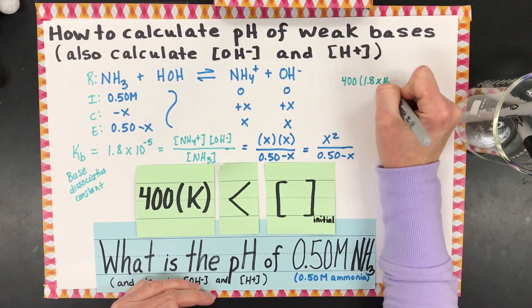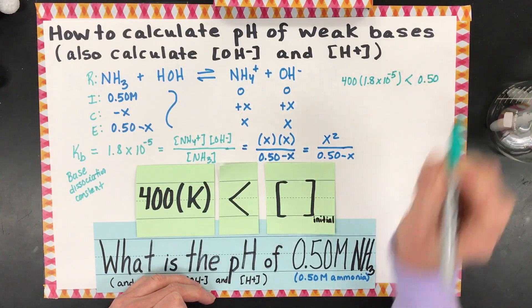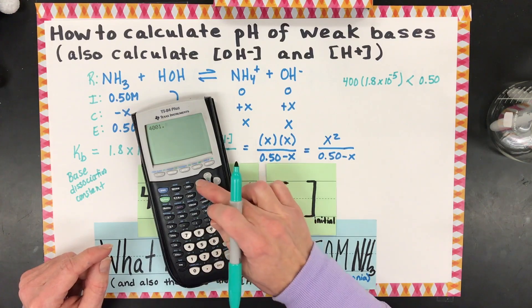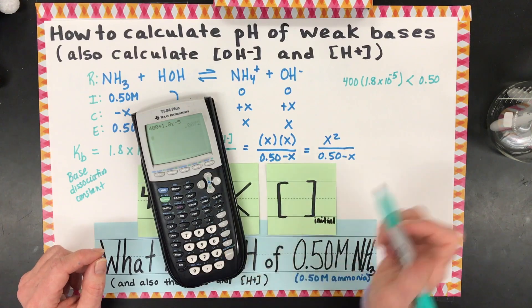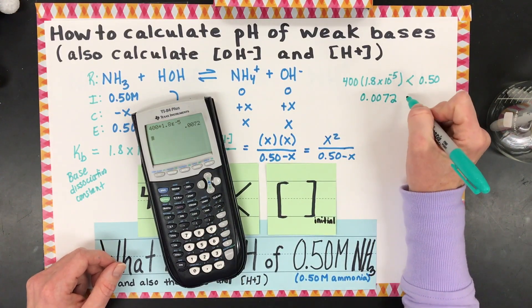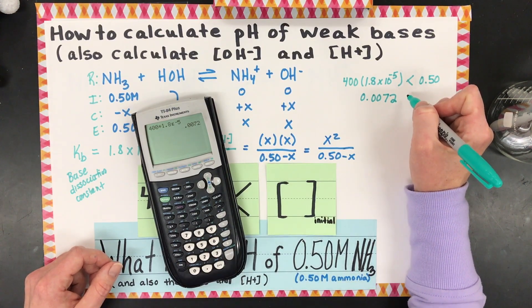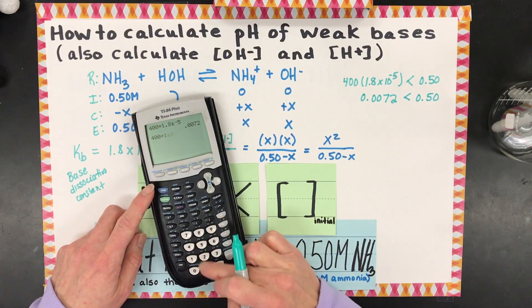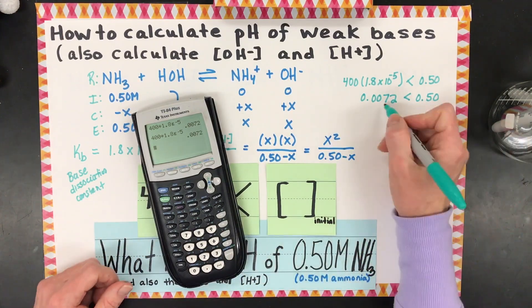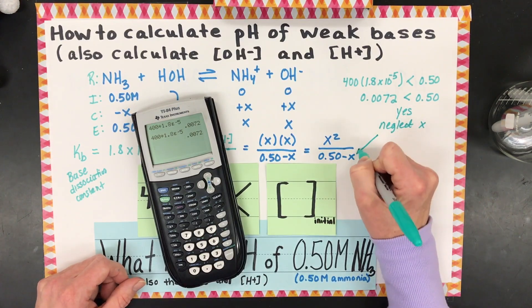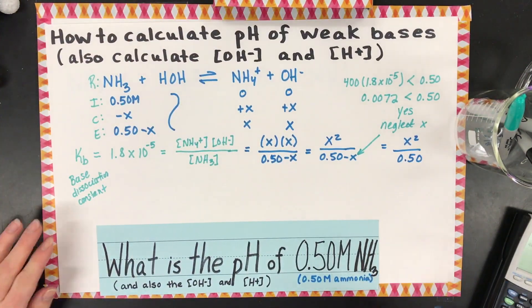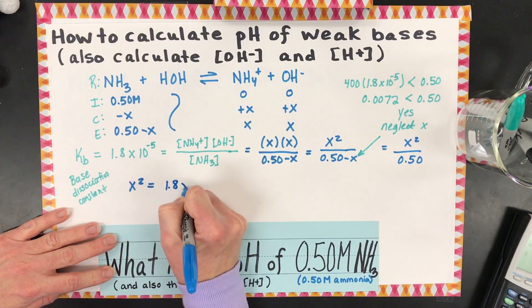So what you'll do then is you'll say, okay, those are X and X. So you're going to use your algebra here. 0.5 minus X on the bottom. Then you can simplify that to X squared divided by 0.5 minus X. Then we're going to use something that I used in a previous video, which is that if I take 400 times the K, and it's less than the initial concentration, I can get rid of this X, I can neglect it. So you take 400 times 1.8 times 10 to the minus 5. It has to be less than the initial concentration, which is 0.5. So you just get your calculator. So 400 times 1.8, second E, negative 5. So I get 0.0072, which is definitely less than 0.50. So yes, we can neglect X right there.